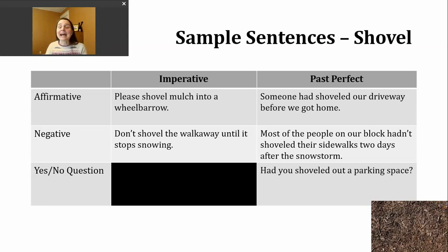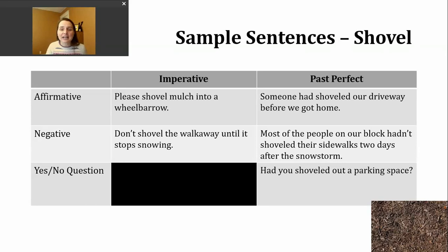To make a negative past perfect sentence, insert not after had. You may hear native speakers use the contraction hadn't. Here is another example: Most of the people on our block hadn't shoveled their sidewalks two days after the storm.